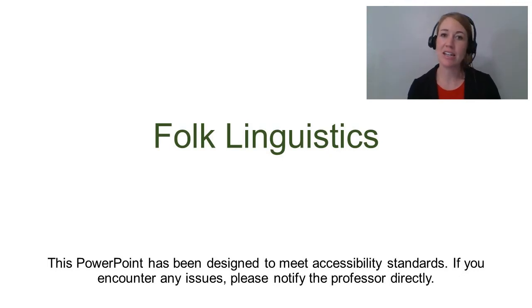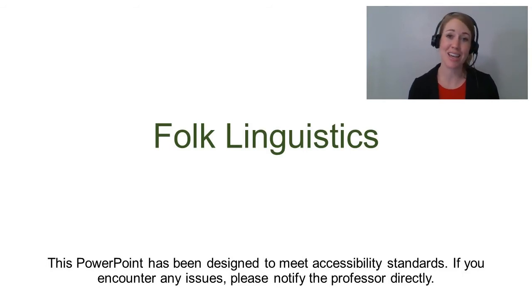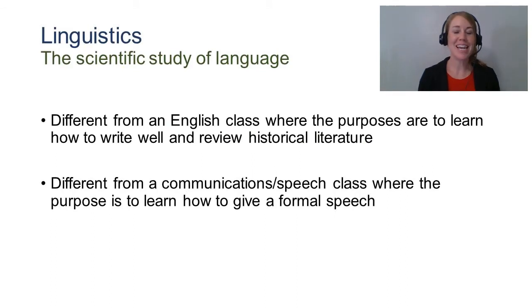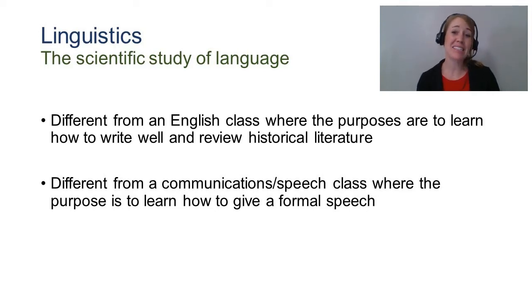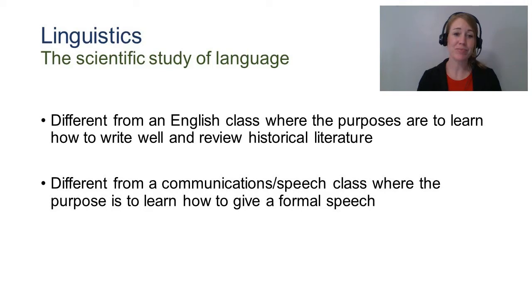Linguistics involves hypothesizing, data collection, and data analysis. So in every way, linguistics is actually considered a science. While at UNT Dallas the linguistics courses are in the School of Education, and at Texas A&M University Commerce all the linguistics courses are under the Department of Literature and Languages, you'll find other universities where linguistics classes are actually under the sciences. Because of its methodology and its approach to research, it's considered a scientific field of study.